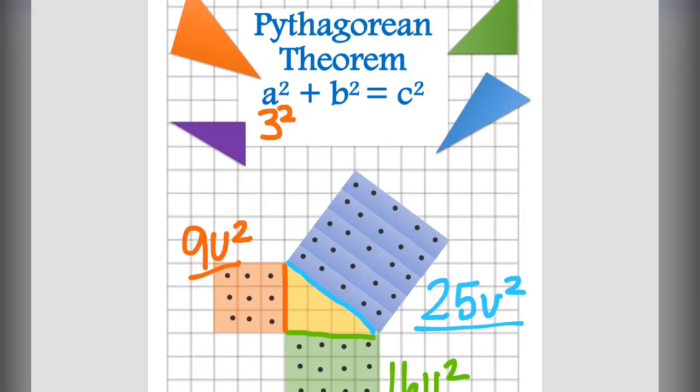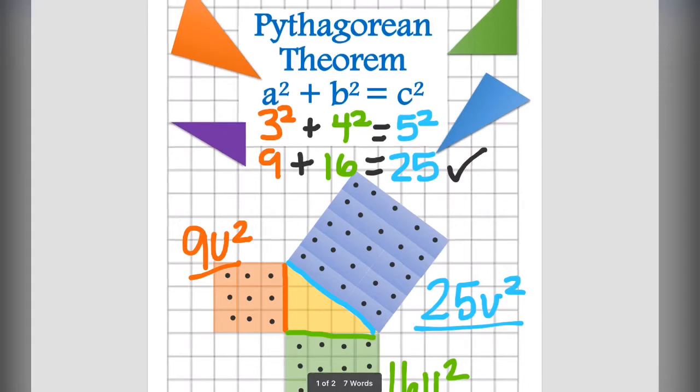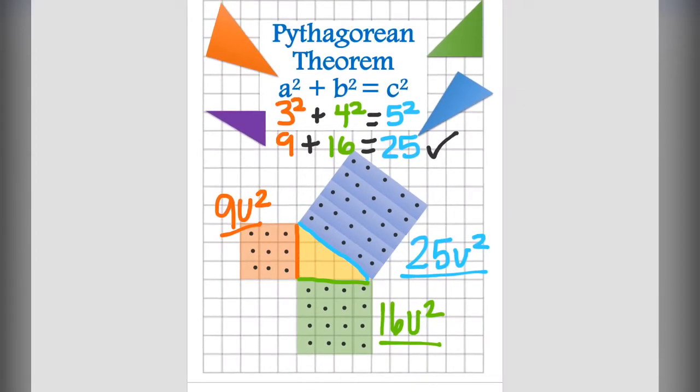We can look at that algebraically by filling it in. We fill in the three for A, the four for B, and the five for C. We will do three squared plus four squared equals five squared. Three squared is nine. Four squared is 16. Five squared is 25. Nine plus 16 does, in fact, equal 25. There is the Pythagorean theorem.